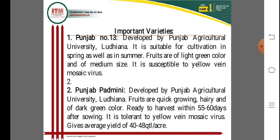Punjab Padmani is another important variety developed by Punjab Agricultural University, Ludhiana. Fruits are quick-growing, hairy, and dark green in color. It is ready to harvest within 55 to 60 days after sowing. It is tolerant to Yellow Vein Mosaic Virus and gives an average yield of 40 to 48 quintals per acre.